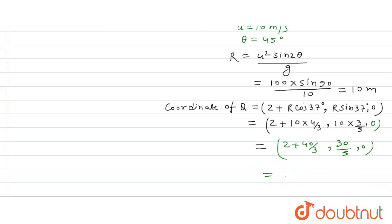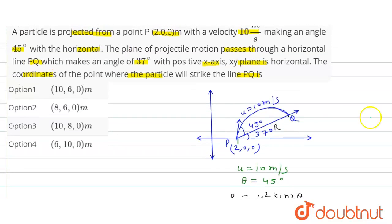(10, 6, 0) is the coordinate of point Q. So option 1 is the correct answer. Thank you.